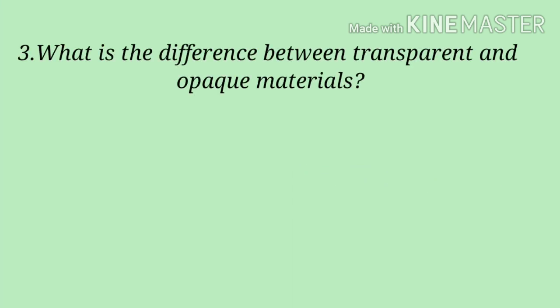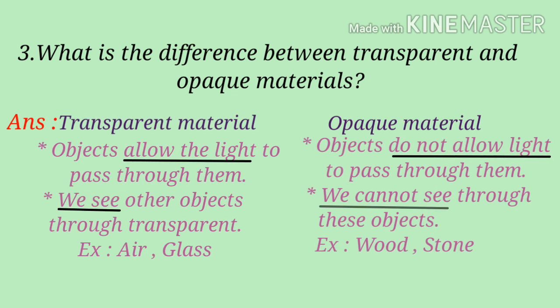Third one: What is the difference between transparent and opaque material? Transparent and opaque. We cannot see the object on the opposite side through opaque. Now let us see the first point.